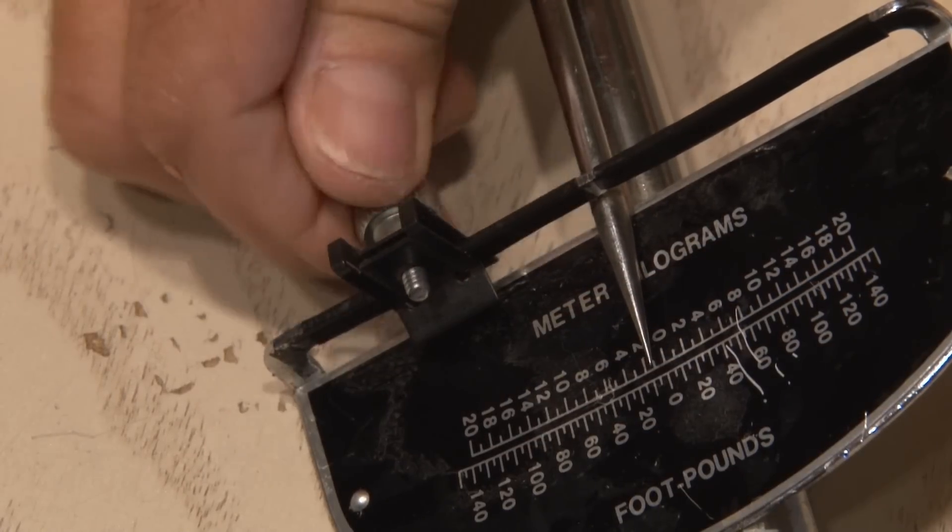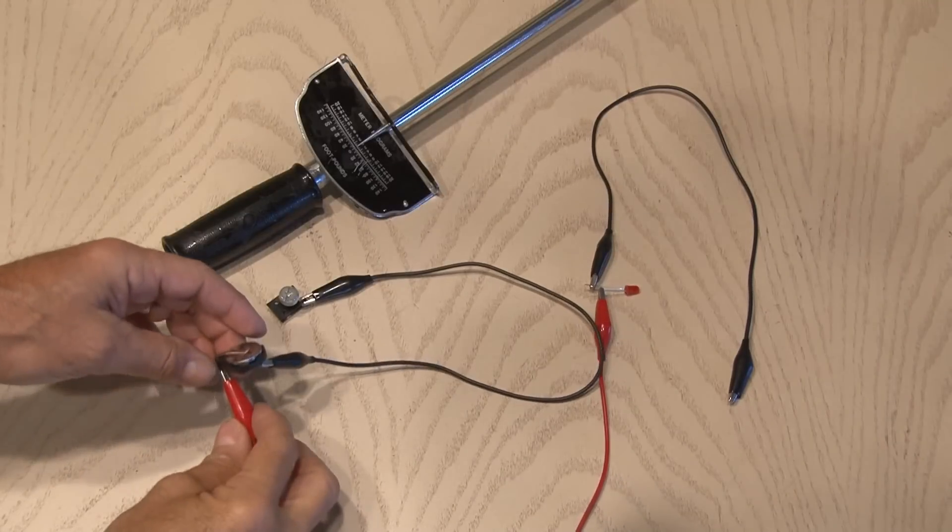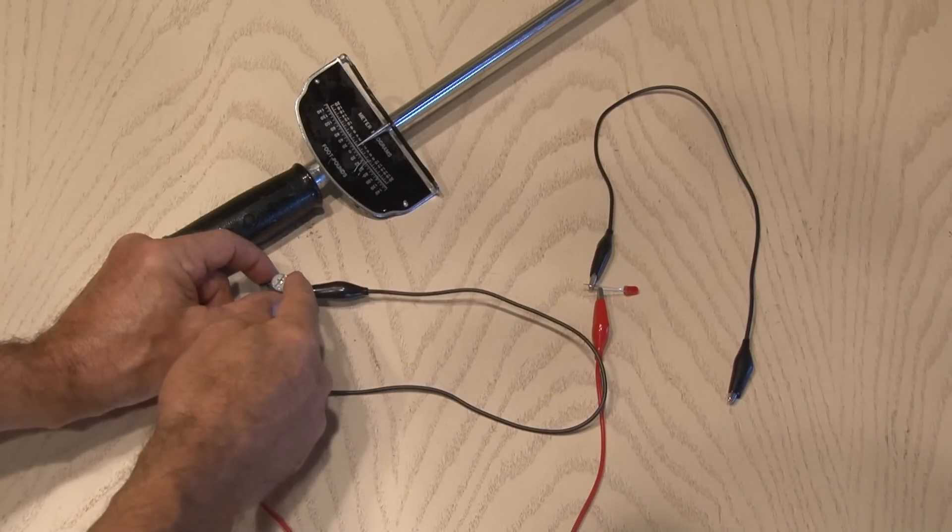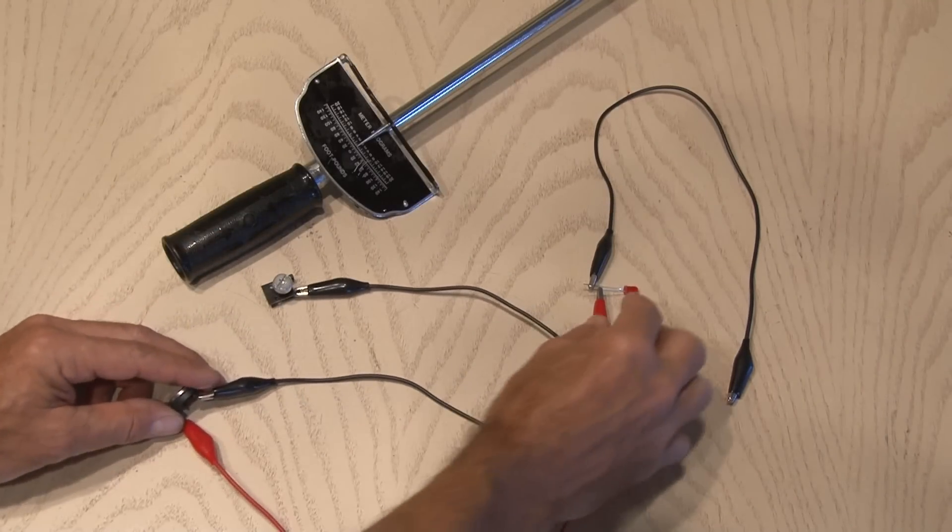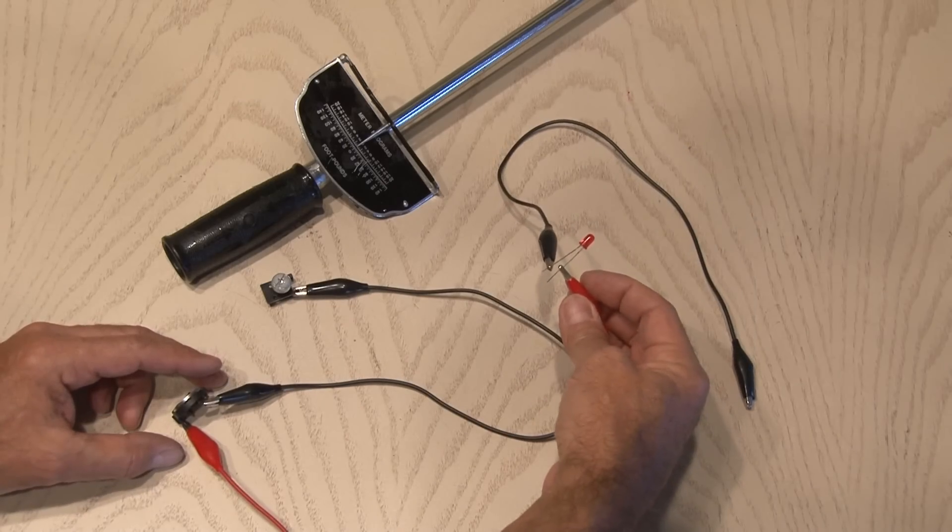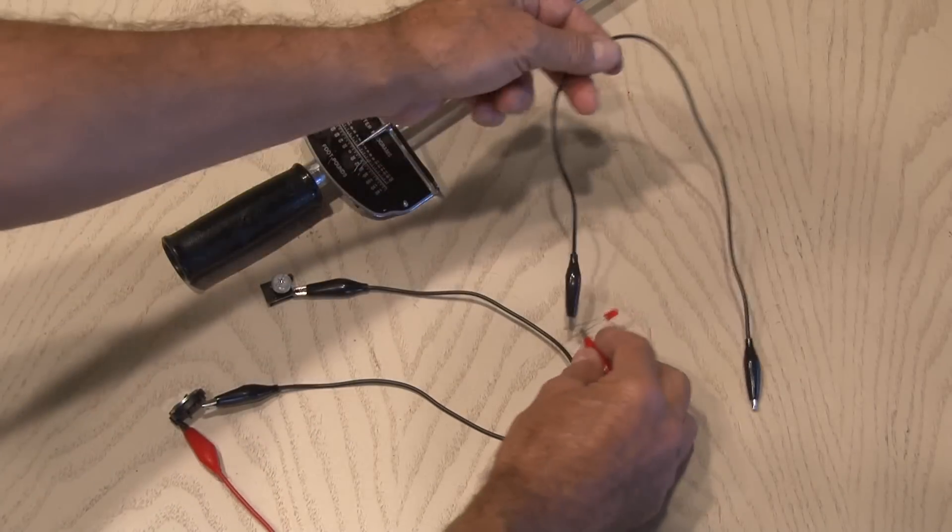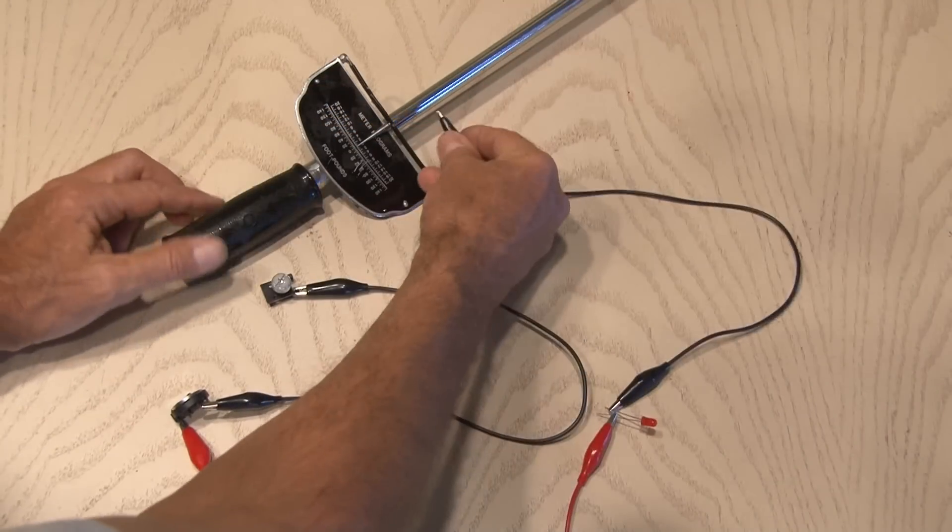The basic wiring for this circuit is pretty simple. We'll go from the negative leg of the battery holder to our U-nut. From the positive end of the battery holder, we'll go to the positive lead on the LED. And the negative lead on the LED will end up going to the torque wrench.